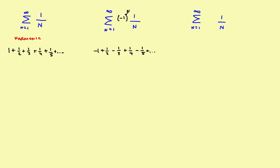The way it works: if you take negative one and raise it to an odd power, you get negative one; raise it to an even power, you get positive one. So if you want the first term to be negative, when n equals one you have negative one to the first power, which is negative one. When n equals two, negative one squared is positive. So if you want your series to start with a negative number, use negative one to the n power.